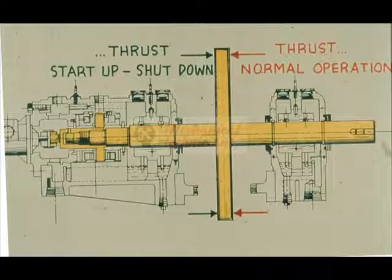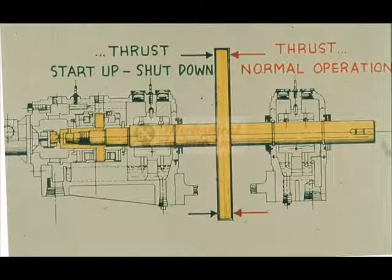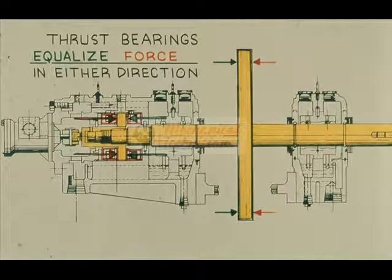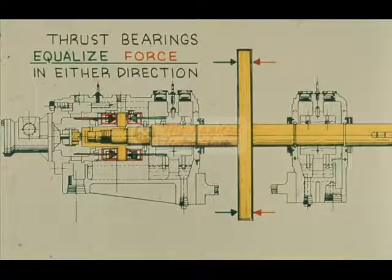Bearing thrust loads cannot exist in opposite directions at the same time, but we frequently find thrust appearing in one direction during normal operation of a machine, with the thrust changing direction during start-up and shut-down. Thrust bearings of the type we will be discussing must therefore be capable of equalizing thrust loads in either direction.